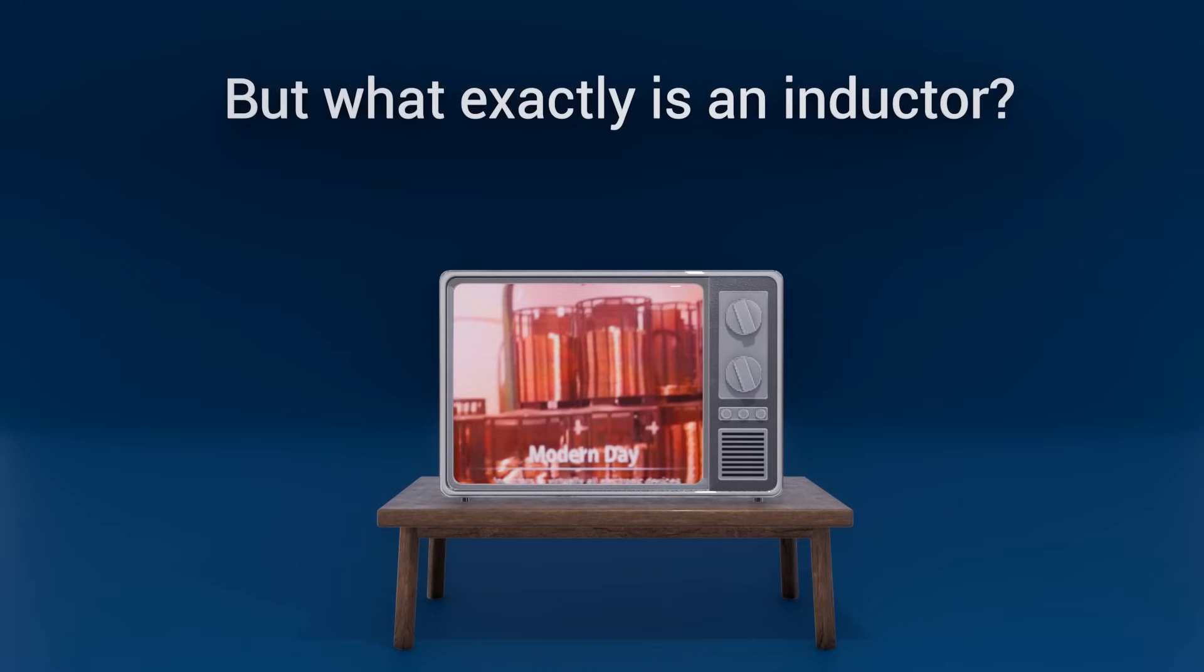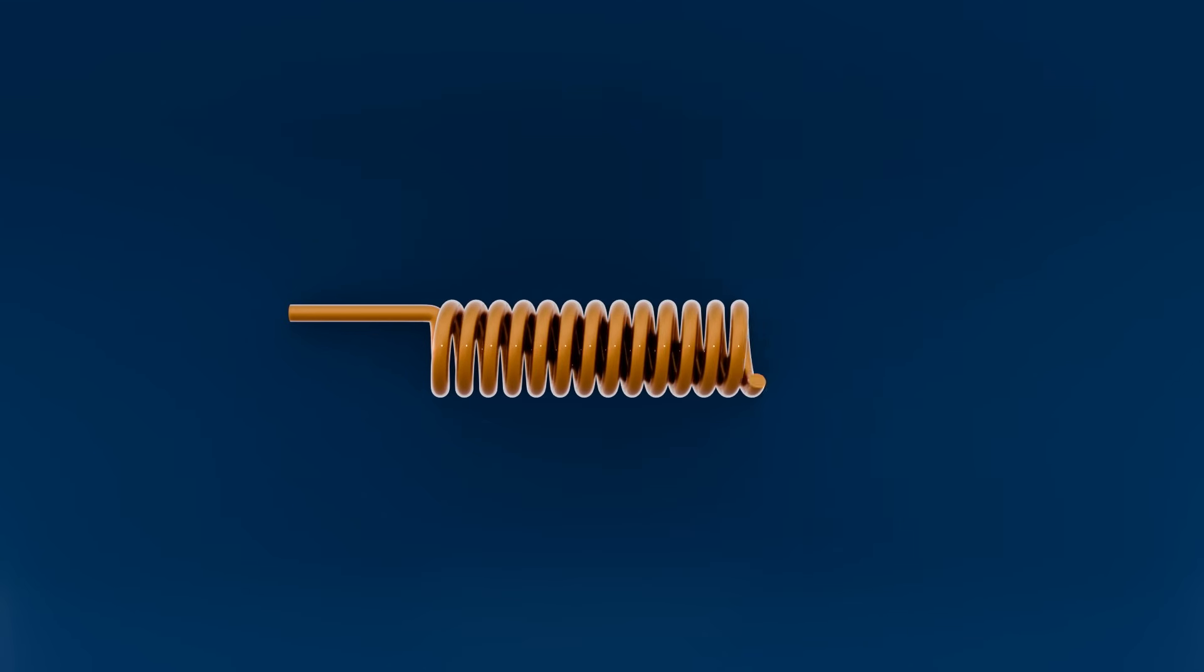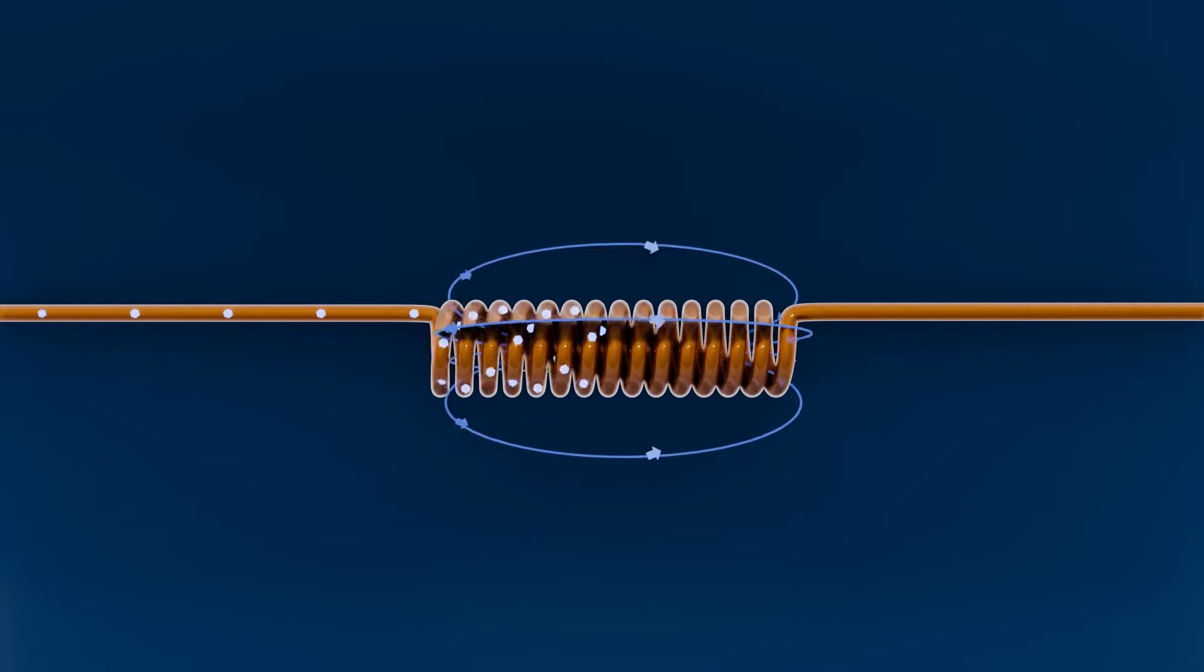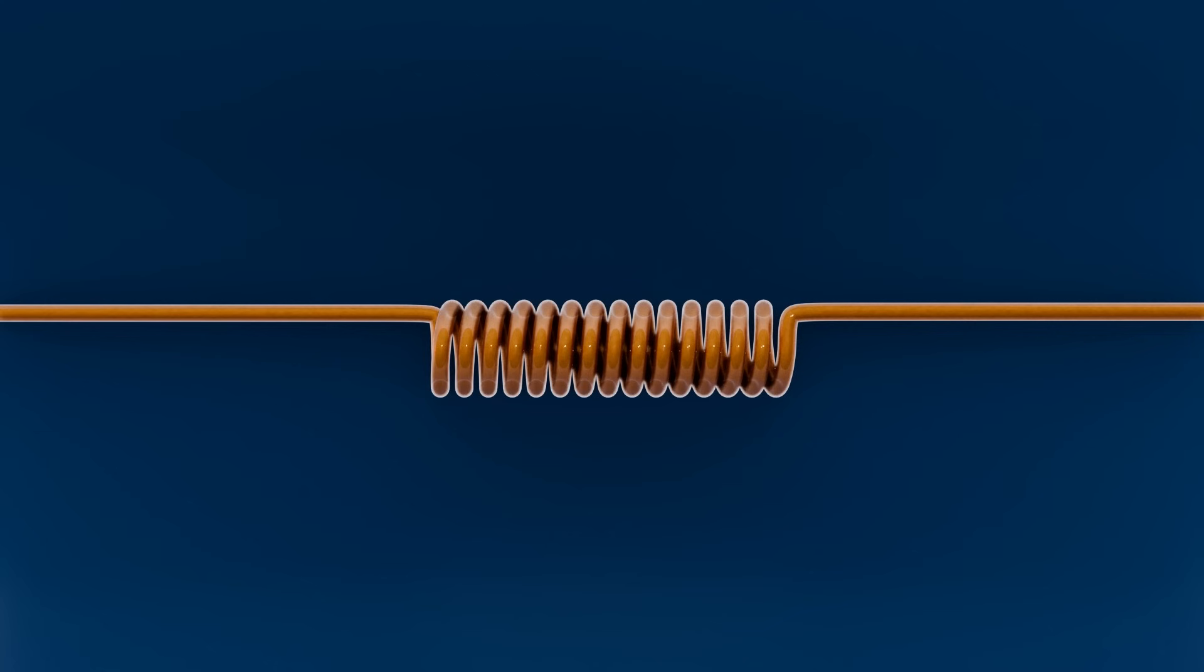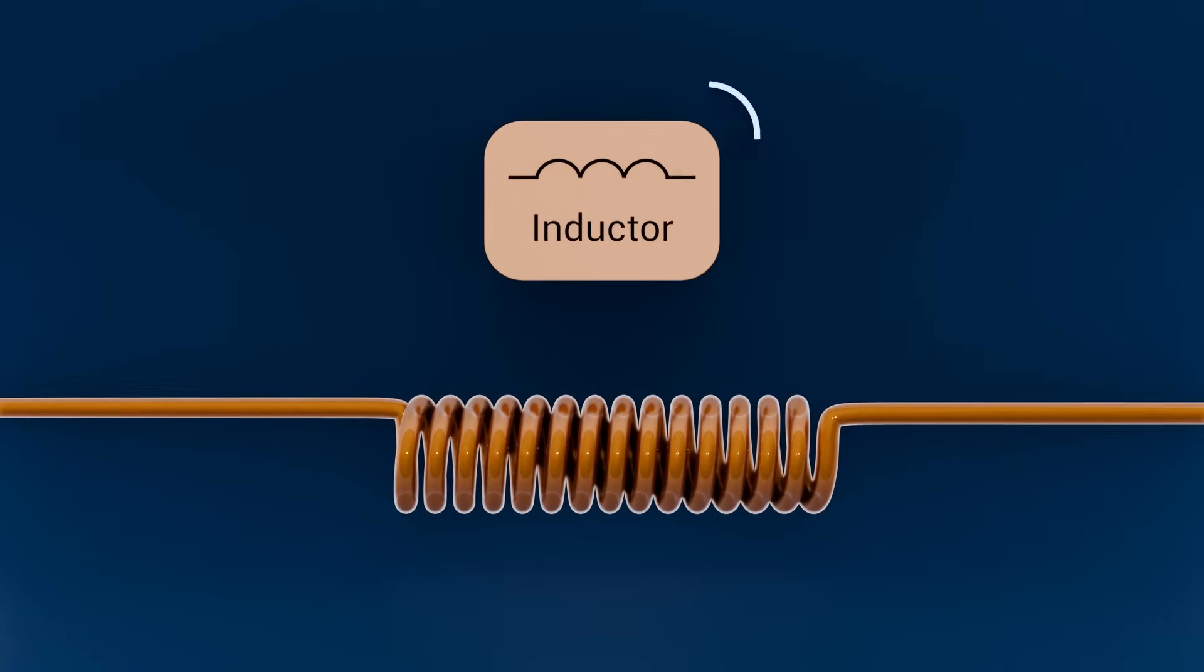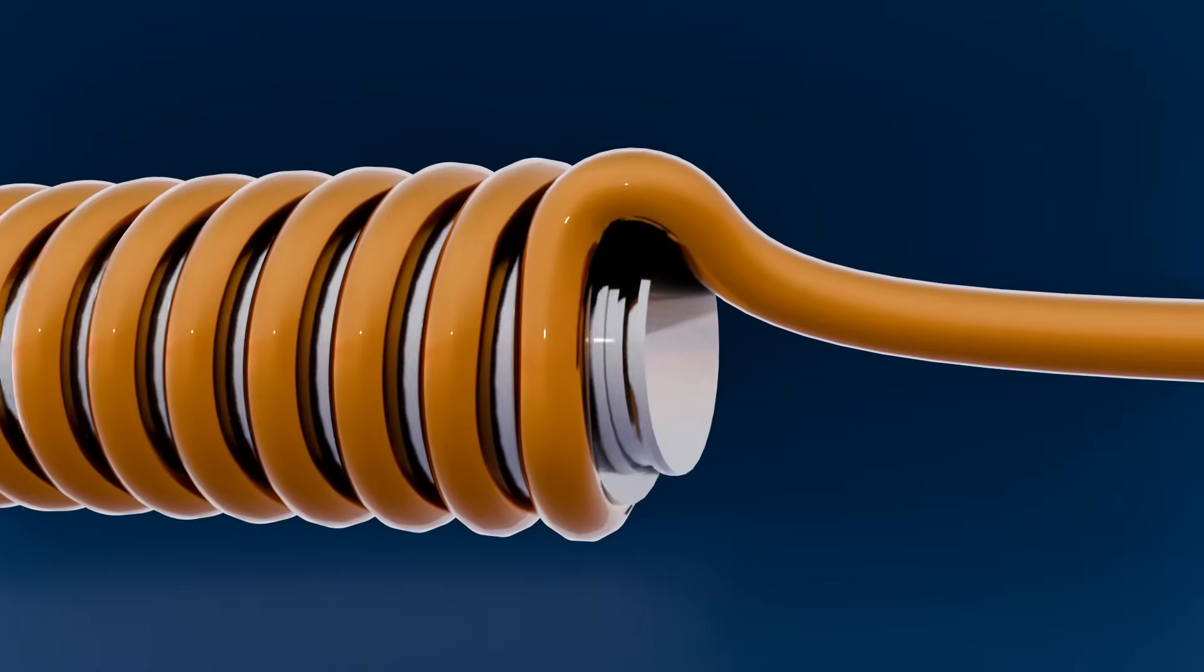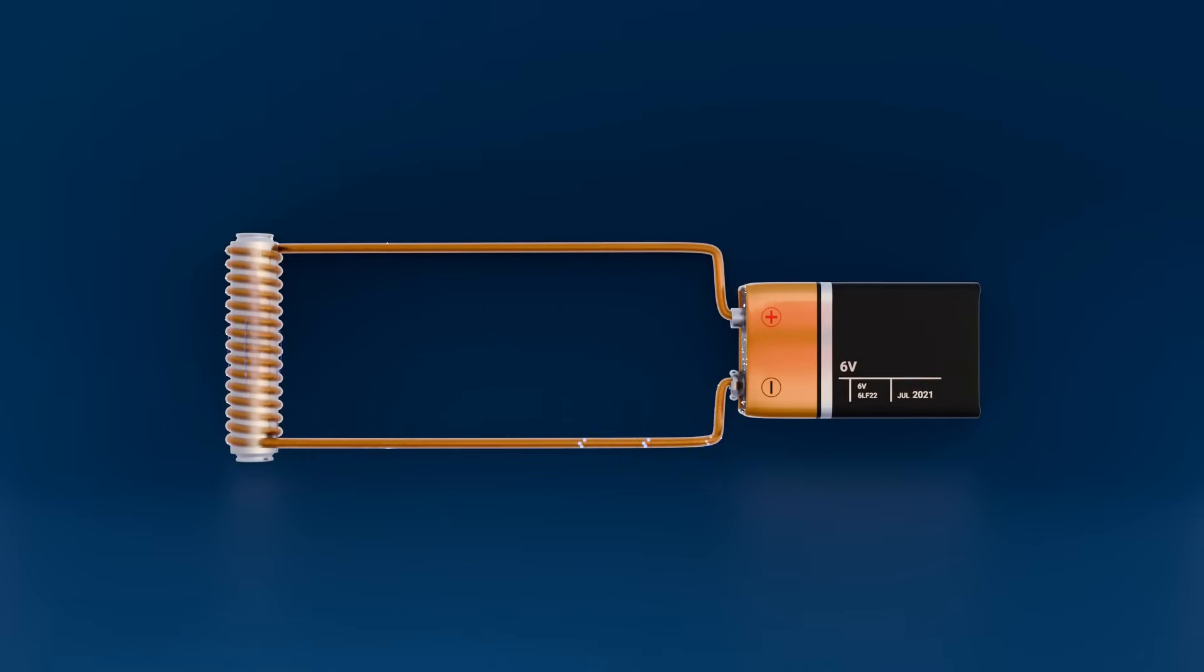But what exactly is an inductor, and how does it work? An inductor is essentially a coil of wire that stores energy in a magnetic field and helps regulate current fluctuations. They usually consist of a wire wound round a ferromagnetic core. Voltage across an inductor gives rise to a magnetic field.